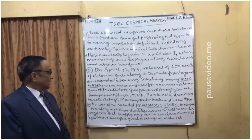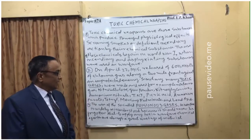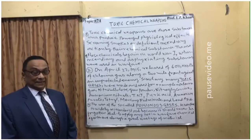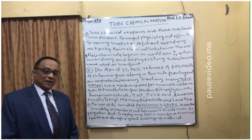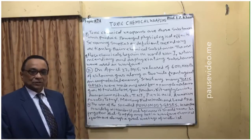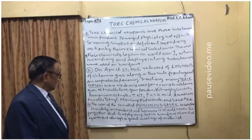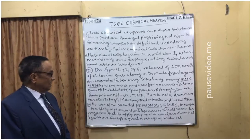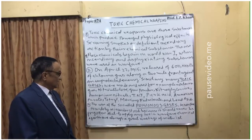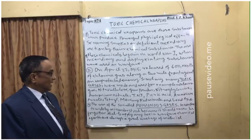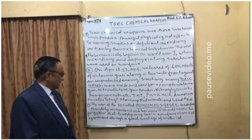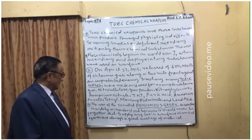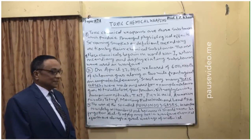Many toxic chemicals were made and used — for example, chlorine gas, nitrocellulose, gunpowder, nitroglycerin, ammonium nitrate, trinitrotoluene (TNT), picric acid, ammonium picrate, tetryl, mercury fulminate, and lead azide. These are all well-known chemical weapons that exist, are manufactured, and are widely used today as military explosives and toxic substances. However, the use of so-called poisonous gases in warfare is widely misunderstood; it should never be forgotten that applying any toxic warfare chemical agent is always a great waste of material.